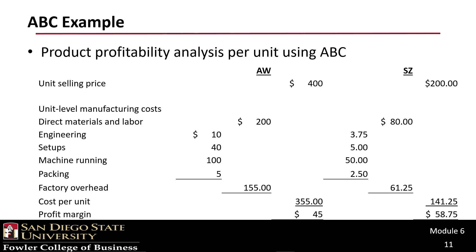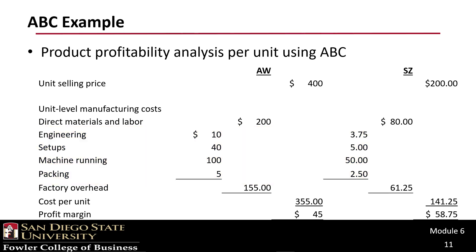Now we redo the product profitability analysis using activity-based costing instead of production volume. The unit selling prices and direct materials and labor are the same as before. But overhead is now allocated differently — broken out by engineering, setups, machine running, and packing per unit. For AW, factory overhead is $155, giving a cost per unit of $355 and a profit margin of only $45. For SZ, overhead per unit is $61.25, cost per unit is $141.25, and profit margin is $58.75.